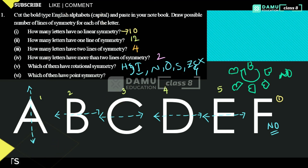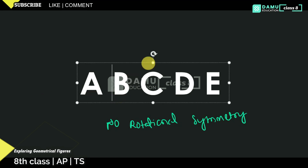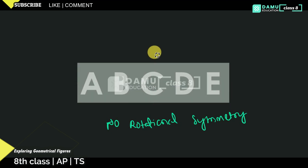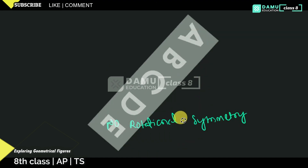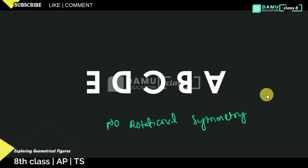Our next question: which of them have point symmetry? Point symmetry means after rotating 180 degrees, if the picture looks the same upside down, then it has point symmetry. Rotating this 180 degrees, here no letter is coming as the same as previous.